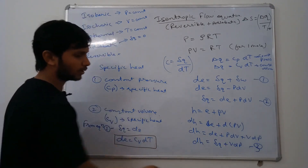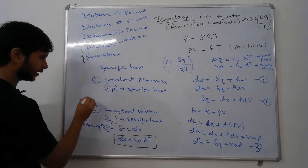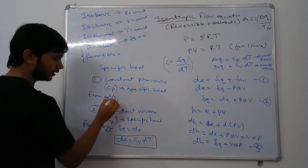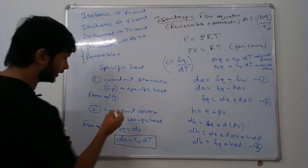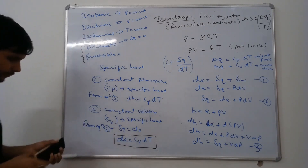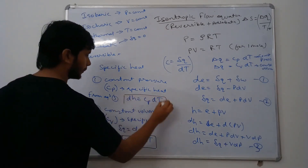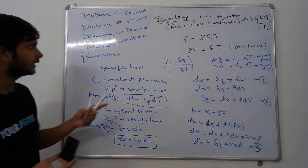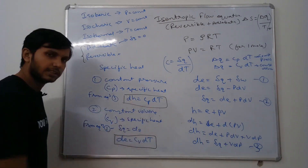In the same way, putting it in equation 3 at constant pressure, V·dP will be zero, so dh = δQ = CP·dT. Therefore dh = CP·dT. Remember these two formulas: dh = CP·dT and dE = CV·dT. We will use these for the isentropic flow derivation.